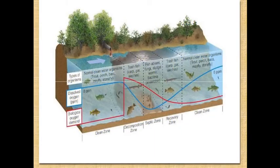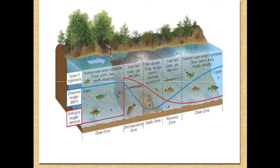After disposal of effluent into water bodies, you can see the pipe discharging effluent into the water body along with the fish and aquatic system present in the water. The different zones that occur are: the clear zone, decomposition zone, septic zone, recovery zone, and clear water zone — these five zones occur in the self-purification process of a polluted stream.